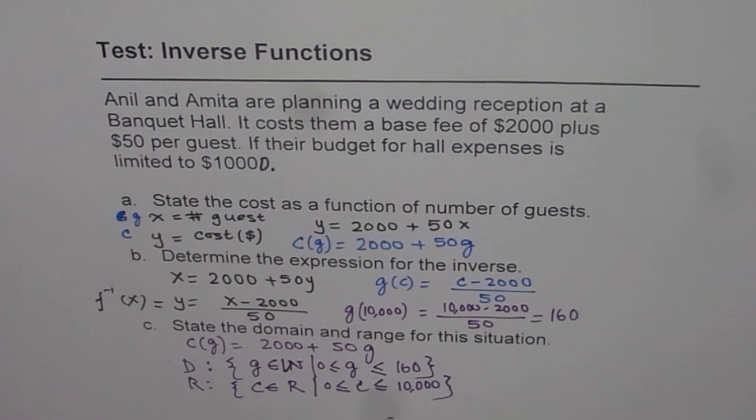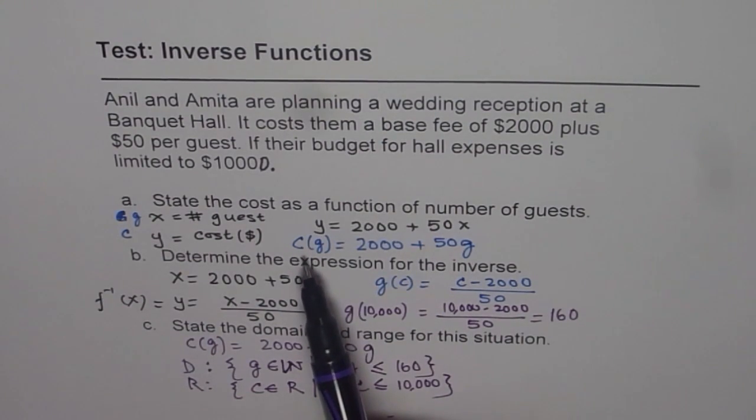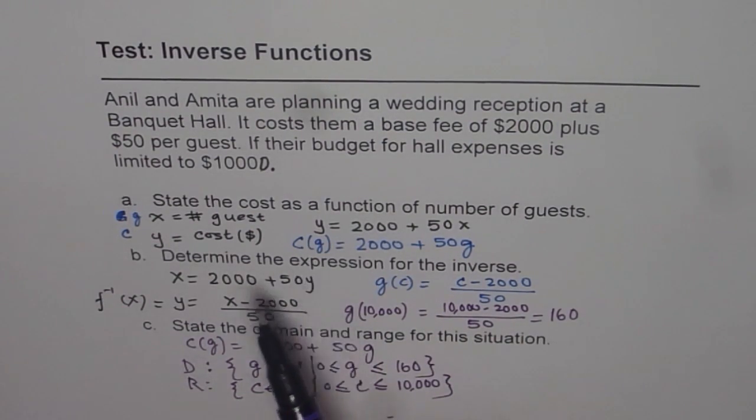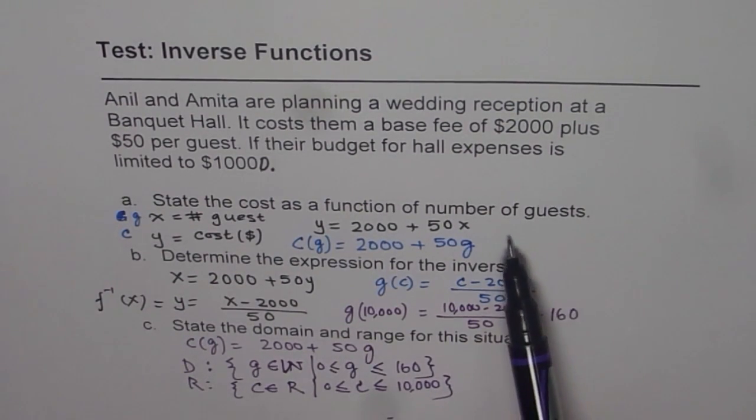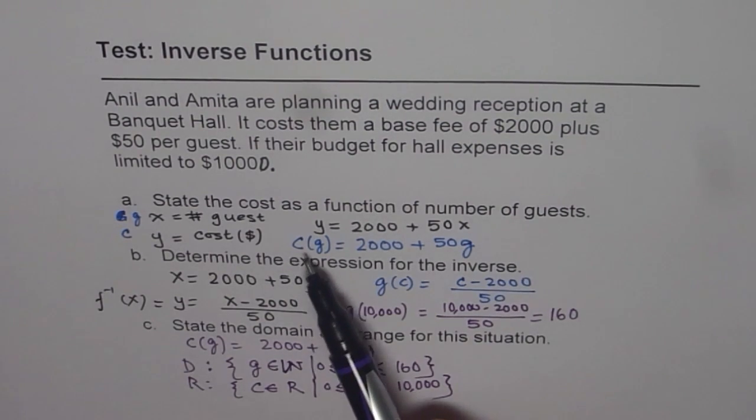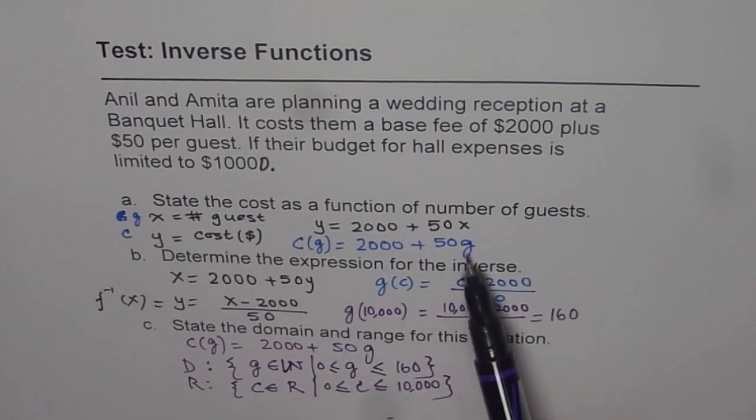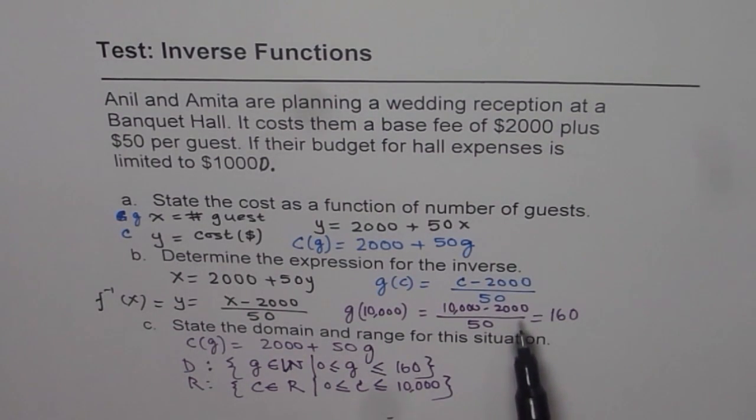I hope now it's absolutely clear. In application problems, I'll prefer you to use meaningful variables. It helps to understand the question. Now you understand, the equation of the function was in terms of cost as a function of guests. And when we find the inverse of the function, it really means guests in terms of the cost. That is how function and its inverse are related. I hope that helps you to understand and solve similar questions. Thank you.